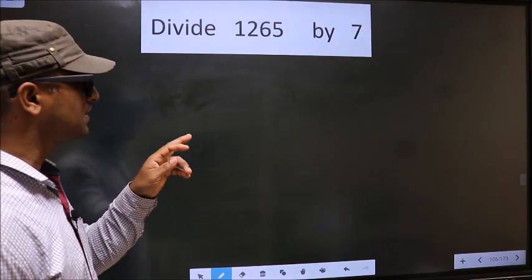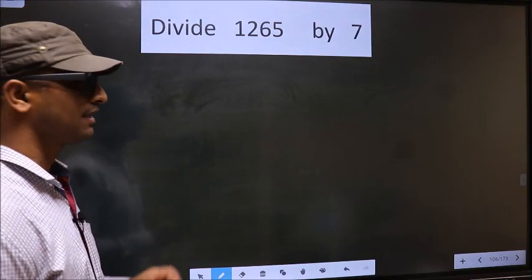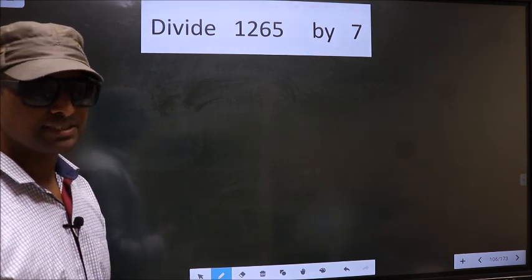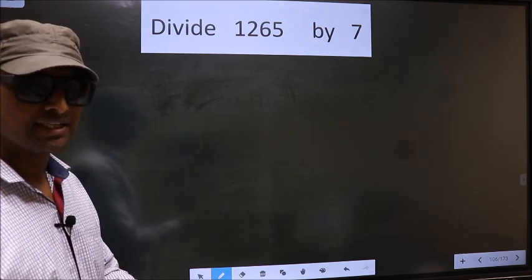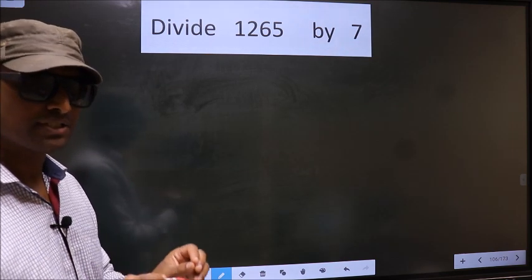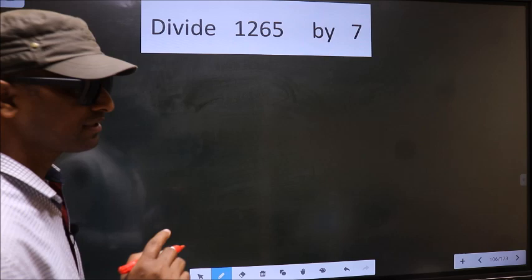Divide 1265 by 7. While doing this division, many do this mistake. What is the mistake that they do? I will let you know. But before that, we should frame it in this way.